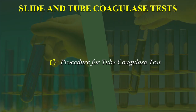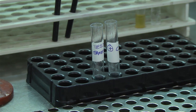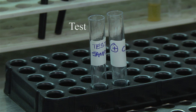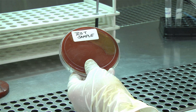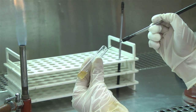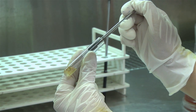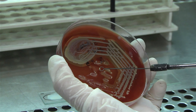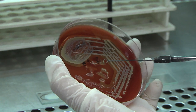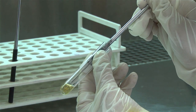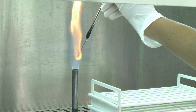Procedure for tube coagulase test: Take 0.5 ml of diluted plasma in two test tubes. Label one tube as the test and the other tube as positive control. With a sterile inoculating loop, pick one to two colonies of the test sample and inoculate in the tube labelled as test. Flame the loop. Similarly, pick one to two colonies of a known strain of Staphylococcus aureus and inoculate in the tube marked as positive control. Flame the loop again before keeping it aside.